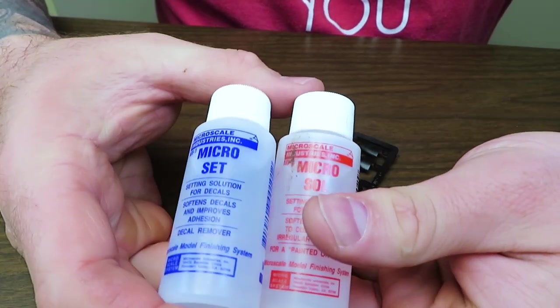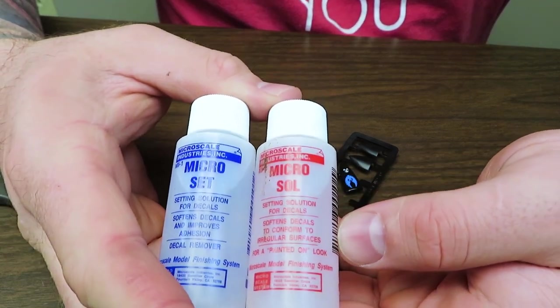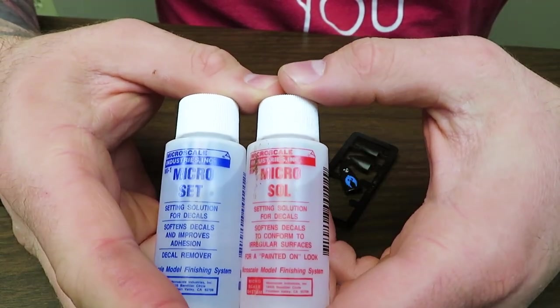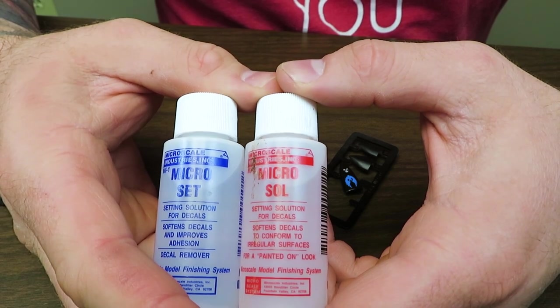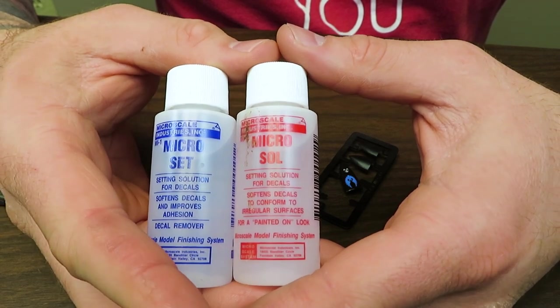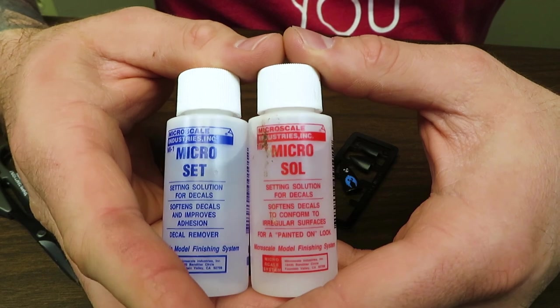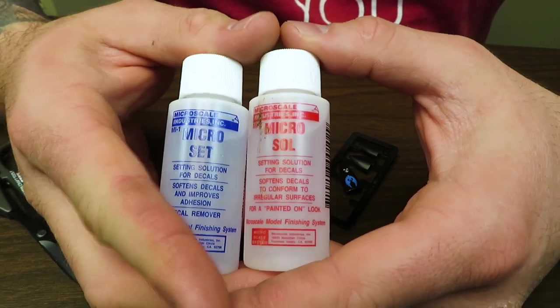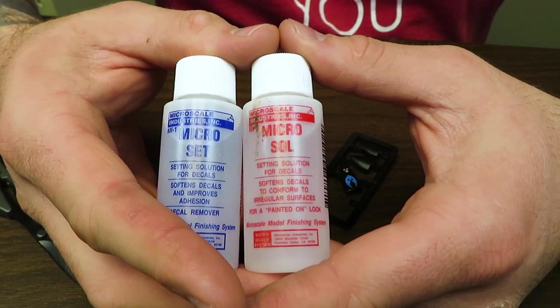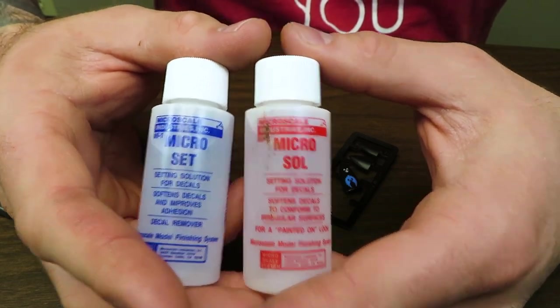I know I talked a lot about the Microset and the Microsol during this video. And these aren't the only products out there, obviously, for this. There's Decal Set and Decal Solvent. Vallejo has ones called, I think it's Decal Fix and Decal Set. These are just the ones I like to use, because I've always liked to use them. That's not saying any other brands work less or better. They're all pretty much the same stuff, from what I can tell.